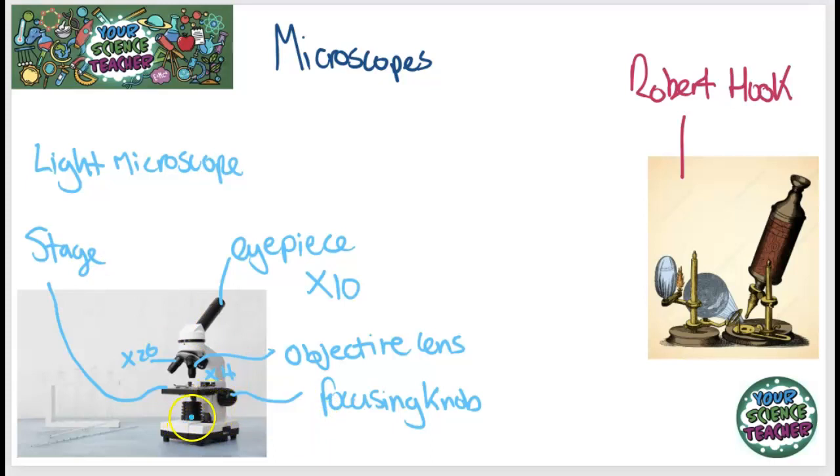And underneath the stage on a light microscope is a light. And this just provides a bit of light so you can see your cells underneath and through your eyepiece and underneath your objective lens.